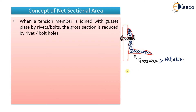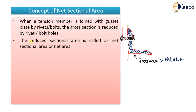The reduced sectional area is called the net sectional area or just the net area. When a tension member is joined with a gusset plate by rivets or bolts, the gross section is reduced. If you are using welding, there is no reduction in the area of the angle. But in case of bolting, there is reduction in the area. That reduced sectional area is known as net sectional area or net area.